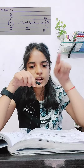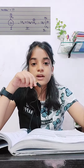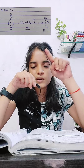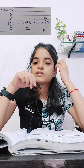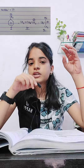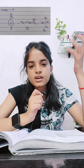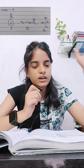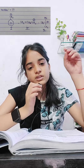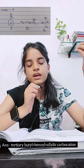If benzylic carbocation has two rings of resonance, it is more stable than tertiary. But with only one ring of resonance — where it is CH3 plus positive — it is less stable than tertiary. The priority for stability is: resonance first, then hyperconjugation, then inductive effects. However, 9 alpha-H in tertiary dominates over resonance.